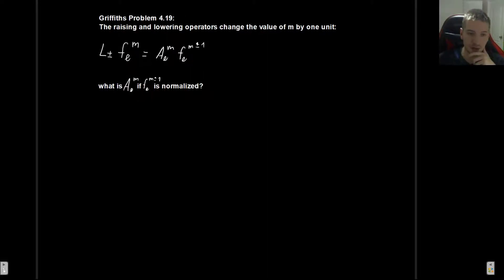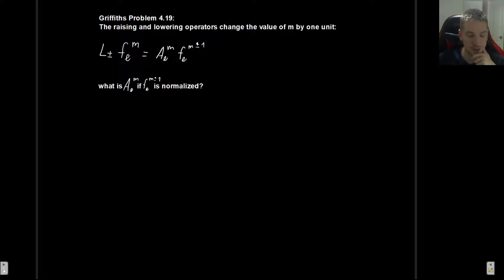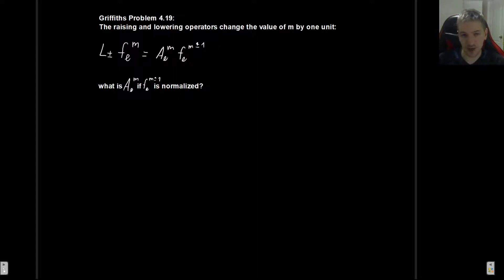In this video I'm going to be solving problem 4.19 as it appears in Griffith's Introduction to Quantum Mechanics, third edition. The problem states that the raising and lowering operators change the value of m by one unit. This means that if you apply L± to some state, you get some constant times that same state but with m either increased or decreased by one. The question is: what is this constant if the new state is normalized?